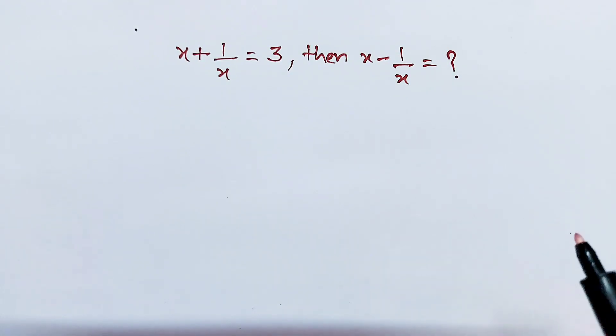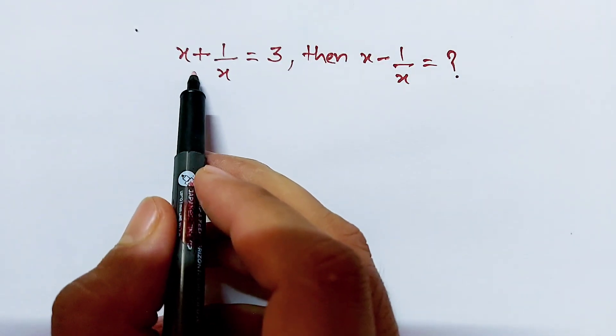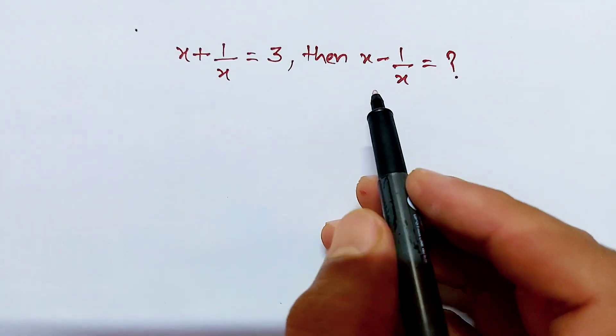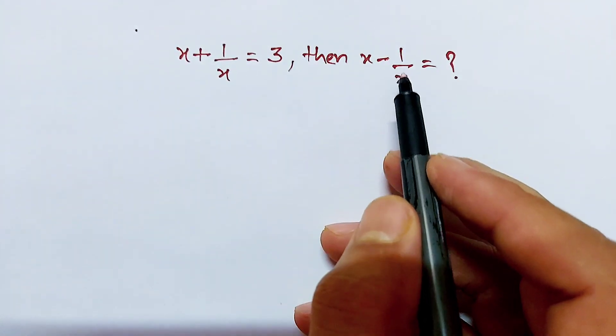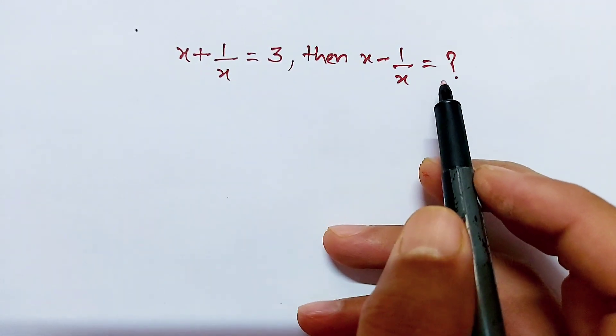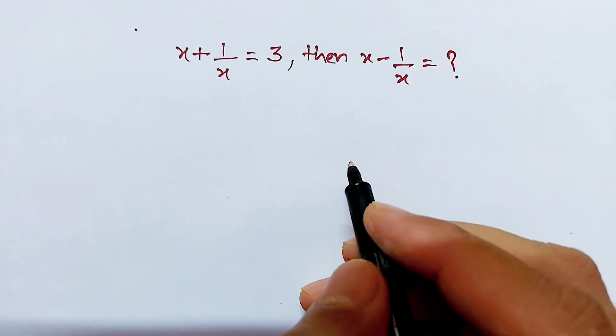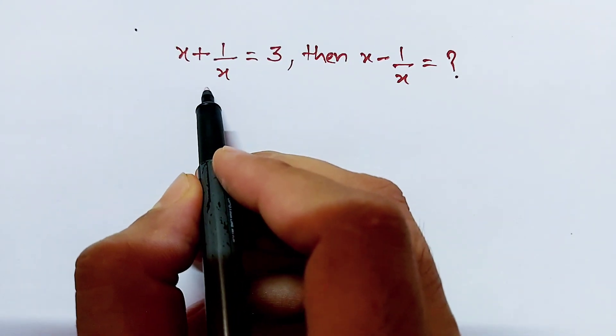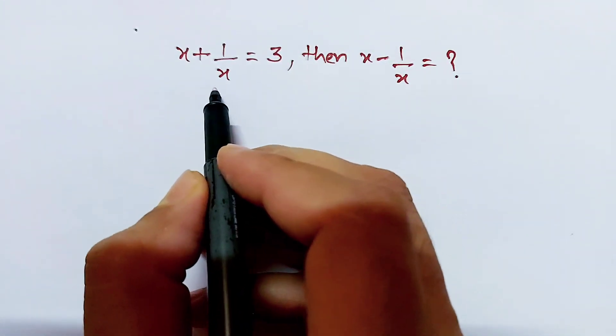The question is: x plus 1 over x equals 3, then x minus 1 over x equals what? Let's find out. First of all, we are taking the square of this equation on both sides.